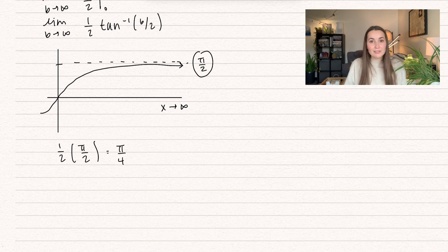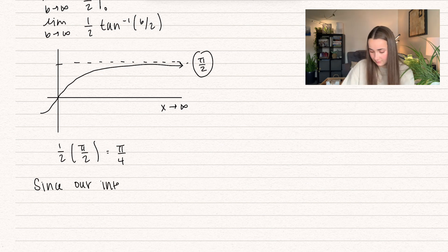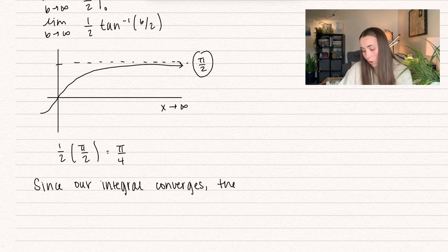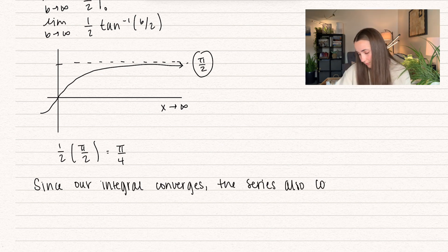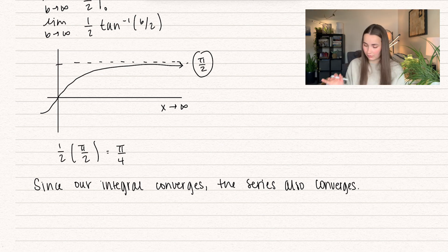It's good to know what inverse tangent does as b approaches infinity. Inverse tangent approaches a horizontal asymptote of pi over 2. So as b approaches infinity, our function approaches pi over 2. This gives us (1/2) times pi/2, which equals pi over 4. This is an example of convergence — since our integral converges, the series also converges. However, it does not mean the series converges to pi over 4; it just means that both of them converge. Be very careful about that.